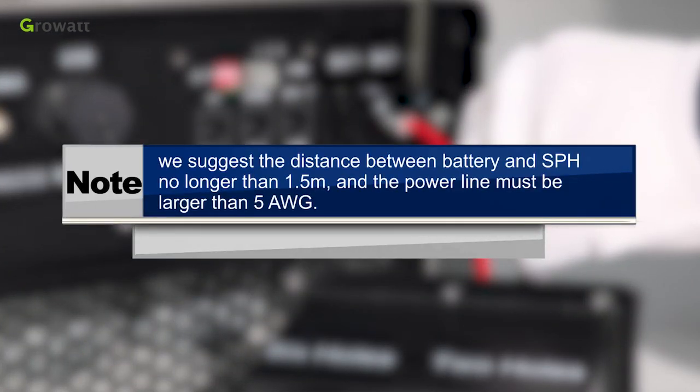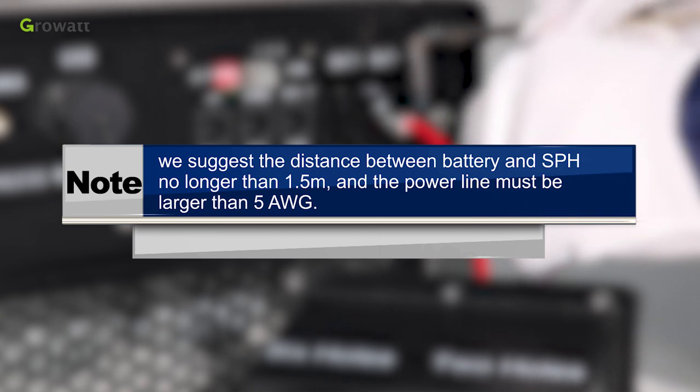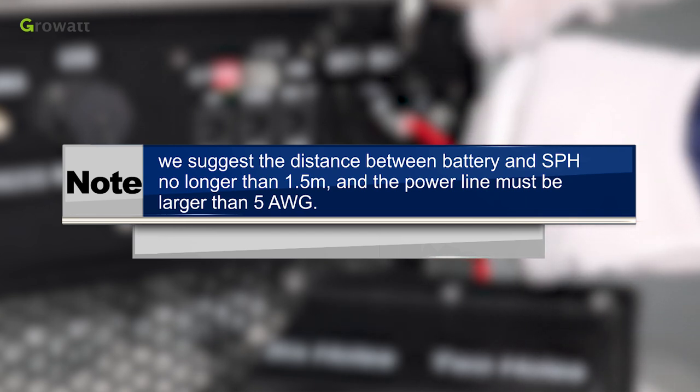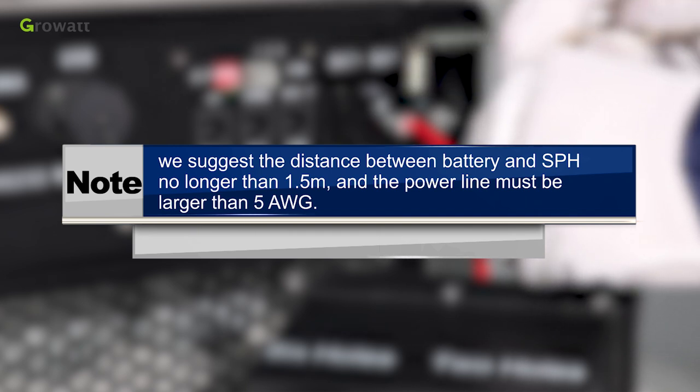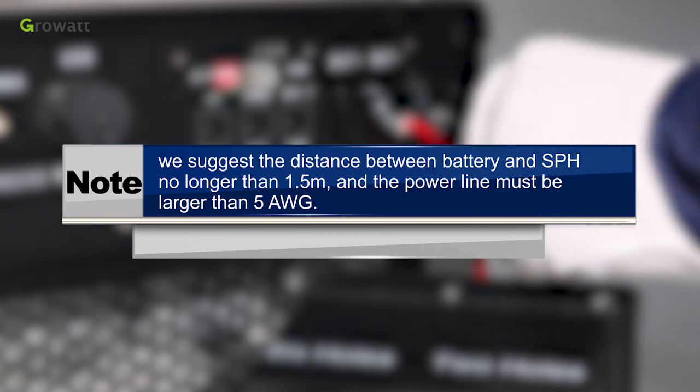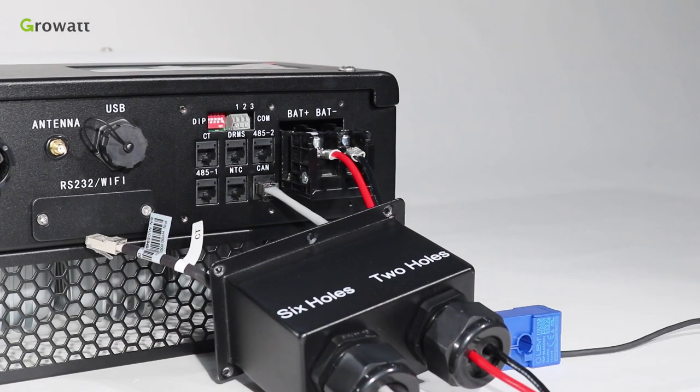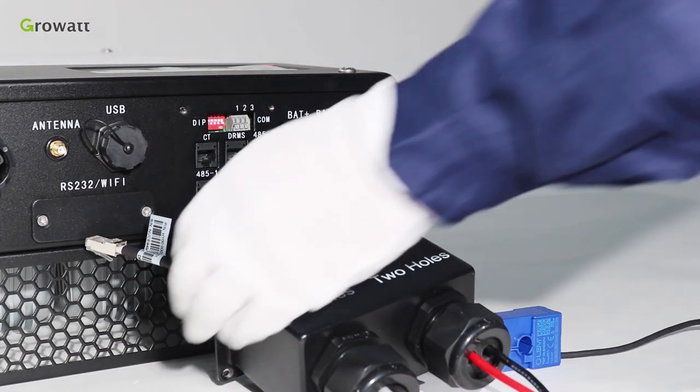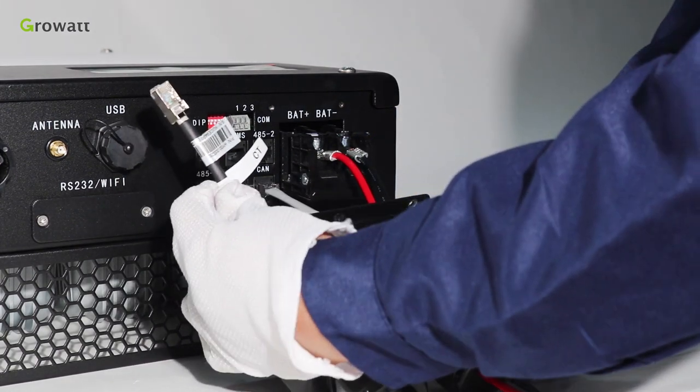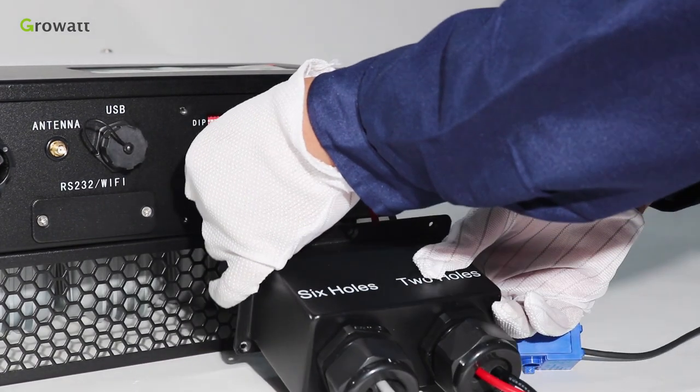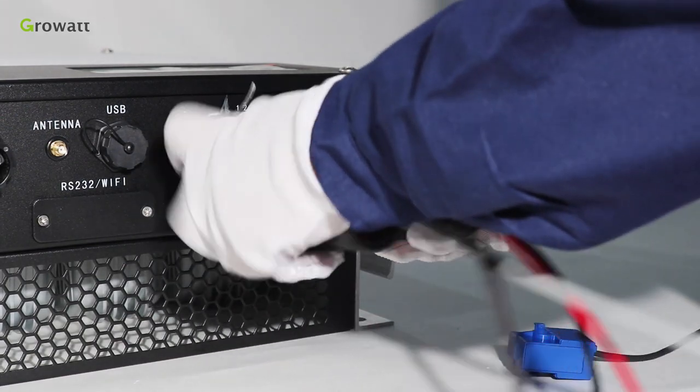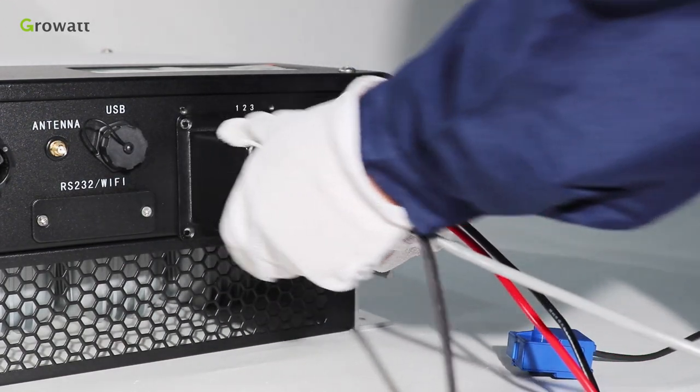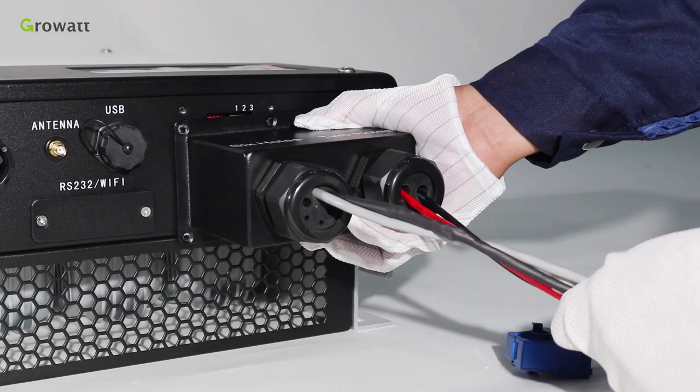Note, we suggest the distance between battery and SPH no longer than 1.5 meters, and the power line must be larger than 5AWG. For communication connection, thread the CT and battery communication cables into the waterproof cover as well. Connect them into the corresponding terminal and connect the waterproof cover into the inverter finally.